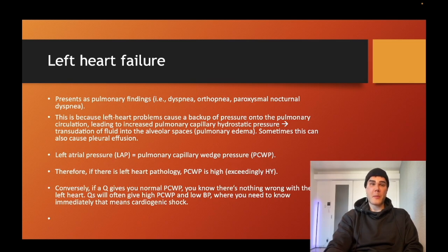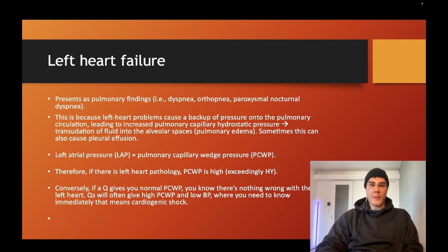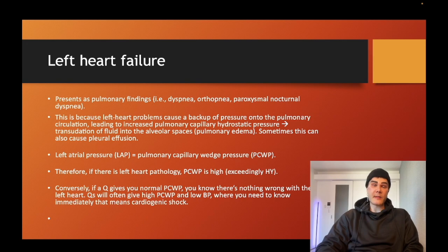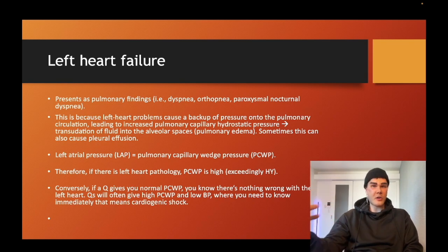Conversely, if your PCWP is normal, you know you don't have left heart pathology. For example, a patient with systemic hypertension who is also an alcoholic gets pancreatitis, then develops bilateral crackles and dyspnea, but the PCWP is normal — that's ARDS, acute respiratory distress syndrome. Even though the patient has systemic hypertension suggesting possible left heart failure, the PCWP is not elevated, so you know it's not cardiogenic in origin — the problem is within the lungs. Pancreatitis is a very buzzy cause of ARDS as an example.